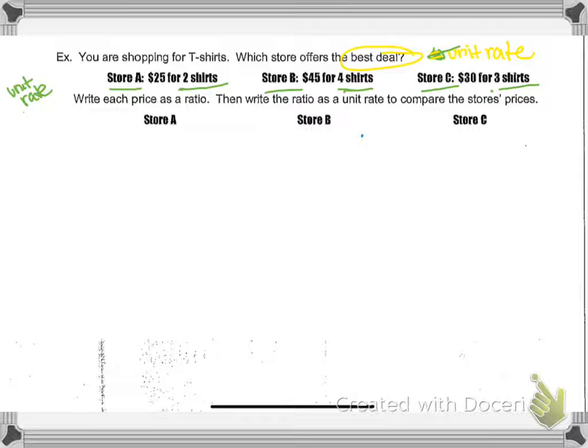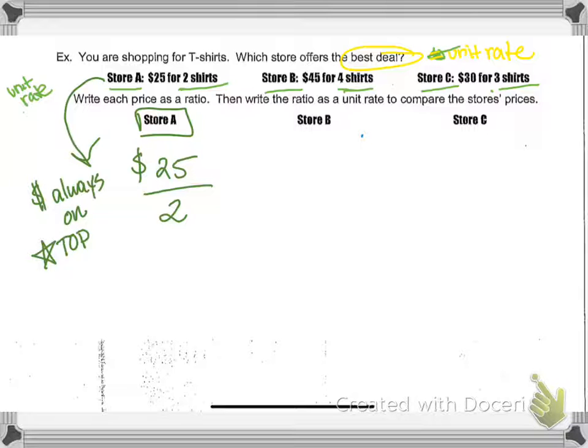And what I'm going to do is I'm going to write a rate for what price they're giving me in the sale sign. So for store A, it's $25 for two t-shirts. Now that's not a unit rate. That's just a regular rate. And it's really important when you're writing those out that you always have the money on top.